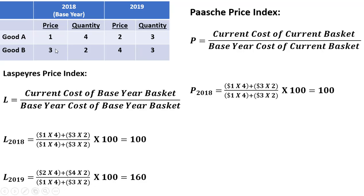So in 2018, the current cost uses prices of $1 and $3, and the current basket is a quantity of 4 and 2. That's what we have in the numerator. In the denominator, we use the base year cost — base year is 2018 — so prices of $1 and $3 multiplied by the current basket, giving us the same calculation. So once again, the price index in the base year is normalized to 100.